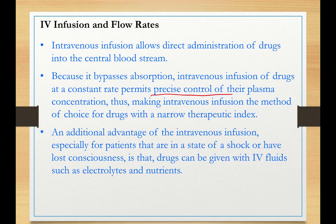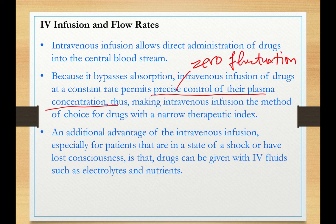Essentially, what we mean is that it has zero fluctuation — no fluctuation at all. So, remember the lecture about fluctuation and accumulation? That makes intravenous infusion the method of choice for drugs with a narrow therapeutic index.